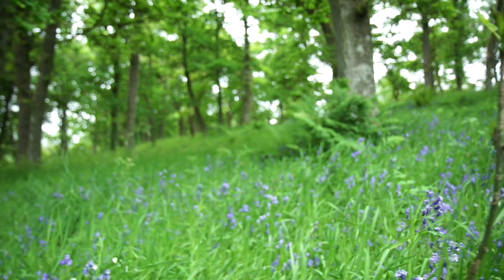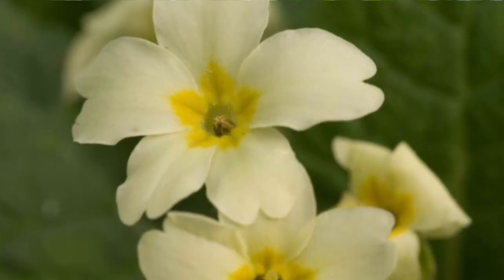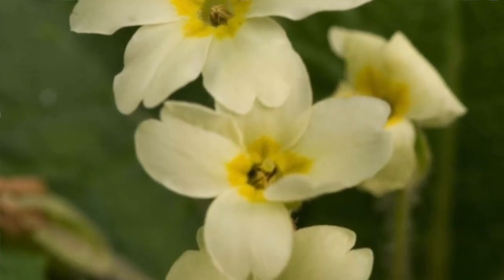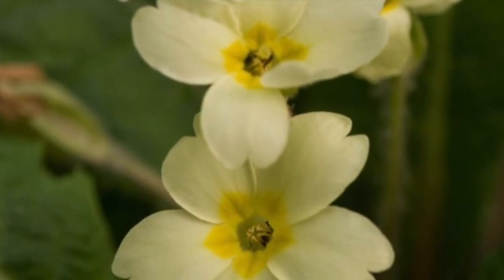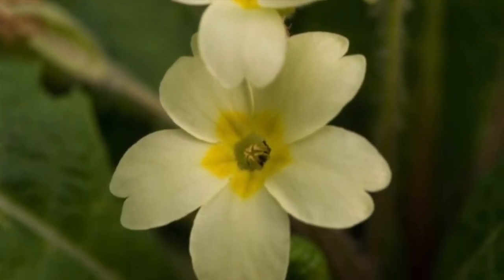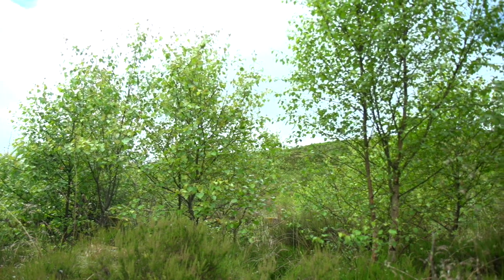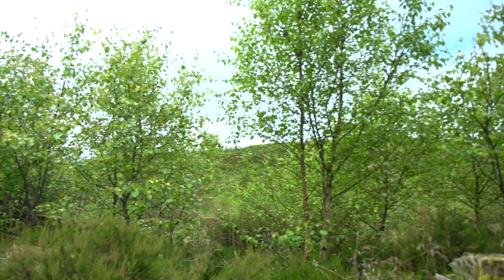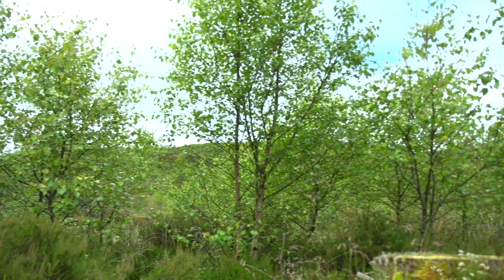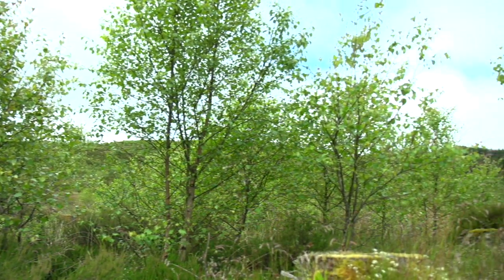Western woods of this type often have bluebells or wild hyacinths and primroses. These woods occur on very acidic, infertile and normally shallow soils of cool, damp areas. Growth is usually slow and sometimes the wood may be no more than low scrub.